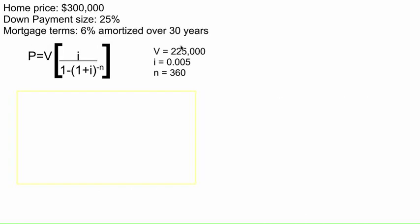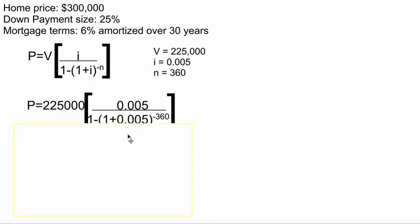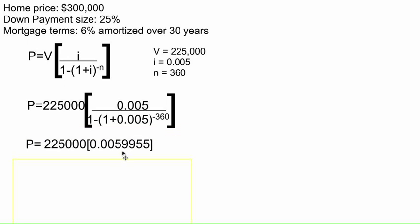Let's plug them all in. I already have these listed out right here: the amount borrowed, the period interest rate, 1 minus (1 plus that rate) raised to the negative number of payments. I went ahead and put all this in the calculator earlier. If you put it in properly — and I encourage you to pause and try it, since it's easy to make a small input error — you should get 0.00599. Multiply that by $225,000, and we get our monthly payment of $1,348.99. This number should be pretty reasonable for a nice $300,000 house.